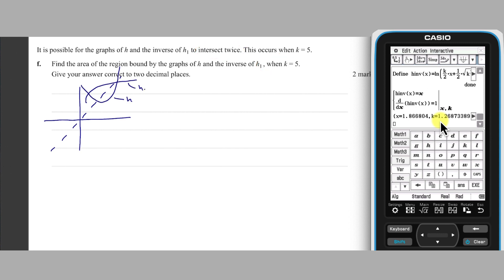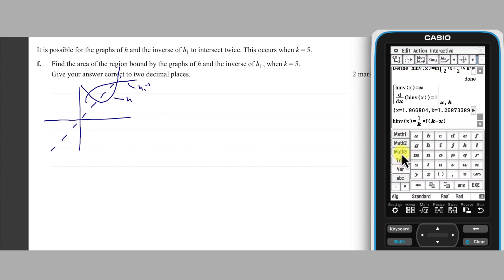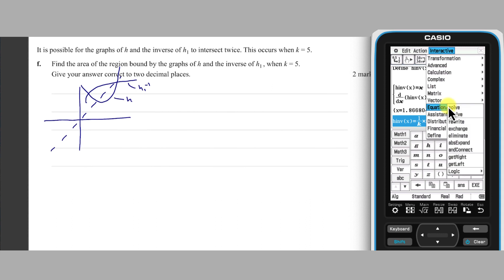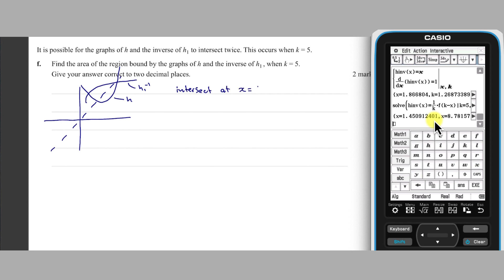To find the area between these curves, we need to find the intersection point of H inverse, as given, and H of X, which is 1 on K, by F of K take X, given that K equals 5. This equation can be solved numerically to obtain intersection points at X equals 1.45 and 8.78 to two decimal places.